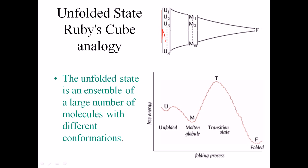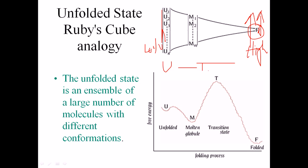Going from the unfolded state to the folded state, we have much more folded protein in the environment than unfolded. If we look at the concentration of different species during folding — unfolded, then transition one, then transition two, then finally folded — we find the highest concentration of folded and the lowest of unfolded, while the transition states are lower than both folded and unfolded.